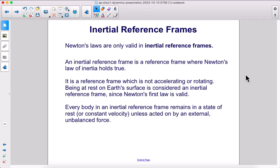Newton's laws are only valid in inertial reference frames. An inertial reference frame is a reference frame where Newton's law of inertia holds true. It is a reference frame which is not accelerating or rotating. Being at rest on Earth's surface is considered an inertial reference frame since Newton's first law is valid. Every body in an inertial reference frame remains in a state of rest or constant velocity unless acted on by an external unbalanced force.